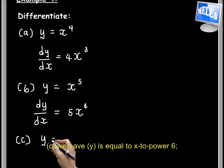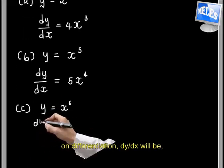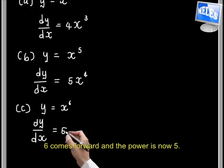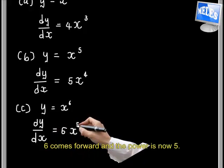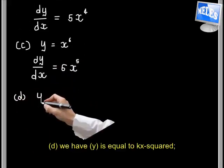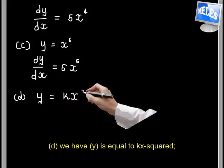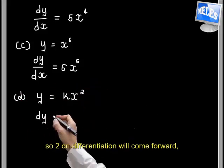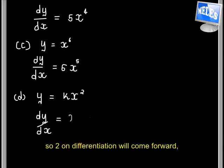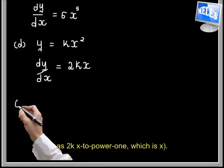So we have y equal to x to the power of 6. On differentiation, dy/dx will be 6 comes forward and the power reduces by 1, giving 6x⁵. Then for d, y is equal to kx squared. On differentiation, 2 comes forward as 2kx to the power of 1, which is simply 2kx.